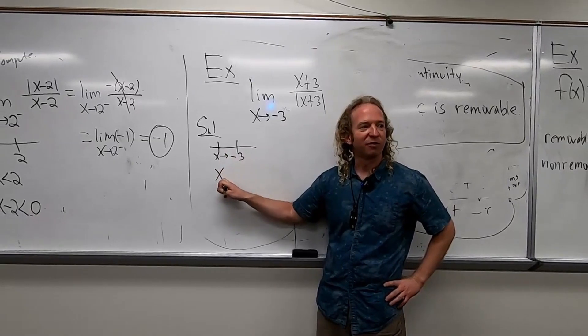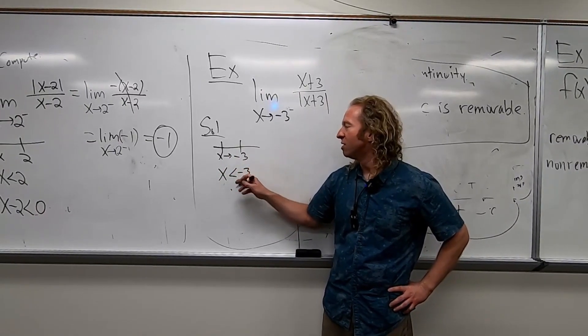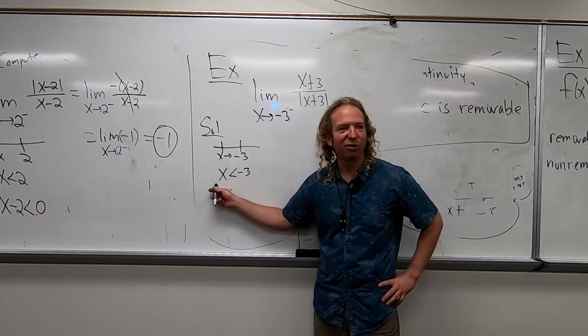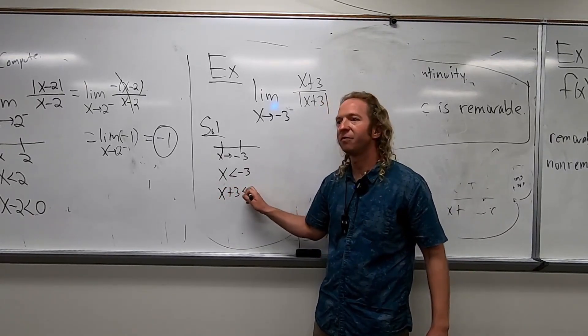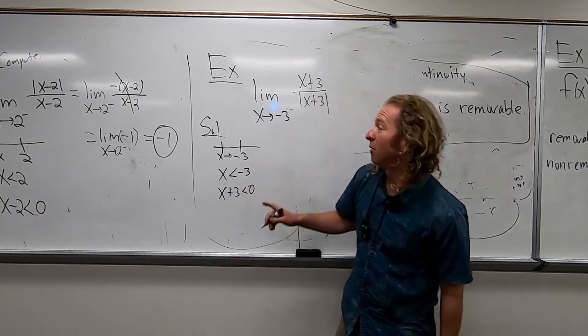So x is less than negative three. So you add three to both sides, right? So x plus three is less than zero.